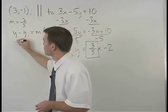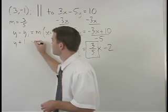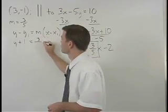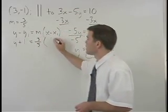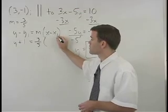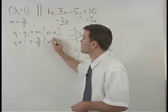y minus y1 would be y minus a negative 1, or y plus 1 equals m, which is 3 fifths, times x minus x1, which would be x minus 3.